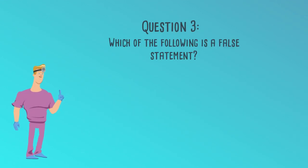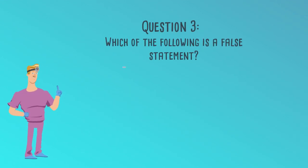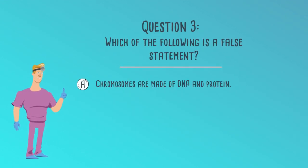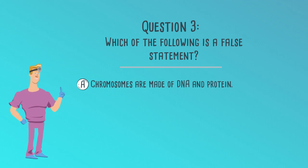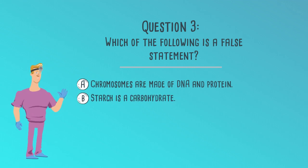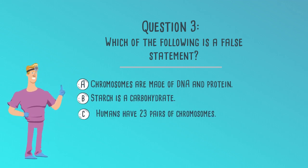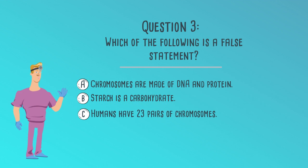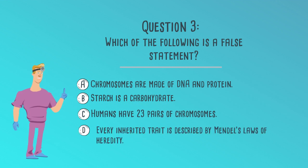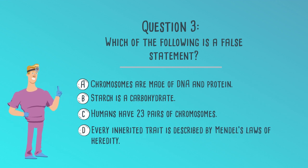Question 3. Which of the following is a false statement? A. Chromosomes are made of DNA and protein. B. Starch is a carbohydrate. C. Humans have 23 pairs of chromosomes. Or D. Every inherited trait is described by Mendel's laws of heredity.